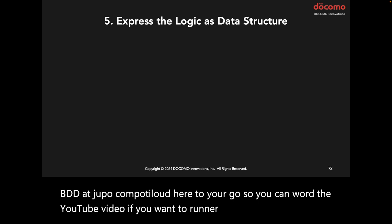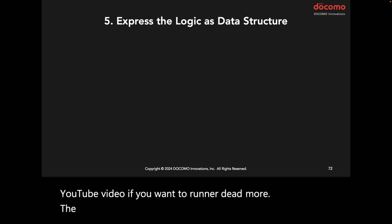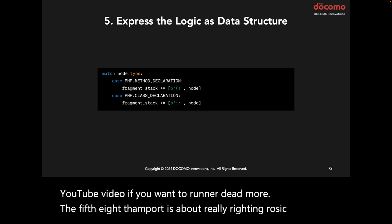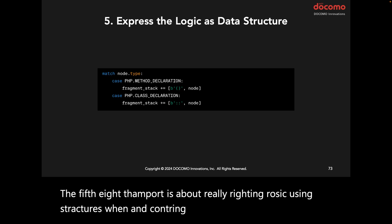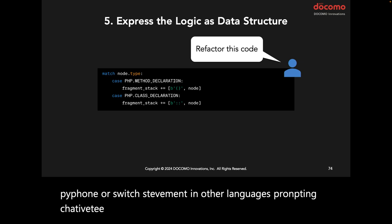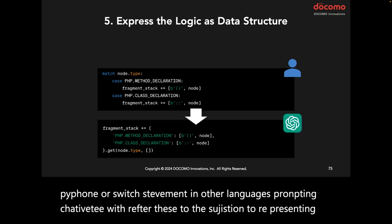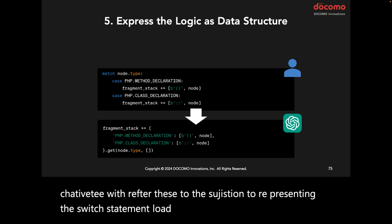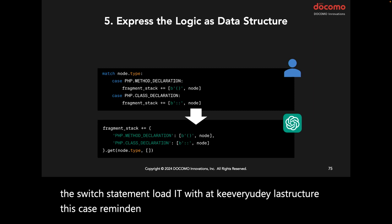The fifth example is about rewriting logic using data structures. When encountering a match-case statement in Python or switch statement in other languages, prompting ChatGPT with 'refactor' leads to the suggestion of representing the switch statement logic with a key-value data structure. This case reminded me of a Google interview — very impactful. Objective code complexity evaluation tools showed that complexity metrics decreased from 2.58 to 2.16 in this instance.